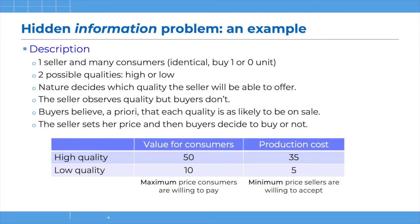We will see later in the second model what happens when the seller does choose the quality. Here, the seller observes the quality of the product but the buyers don't. So there is a situation of asymmetric information, and because buyers don't know the quality of the product before buying, they need to form some kind of expectation. We suppose that a priori they believe that each quality is as likely to be on sale — that is the assumption we take to start our analysis.